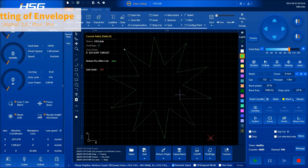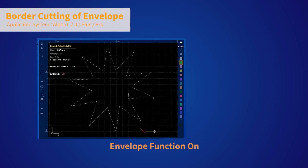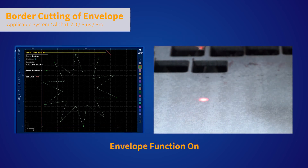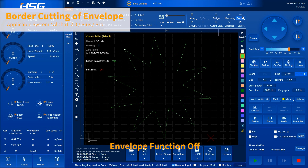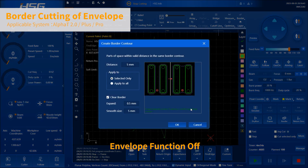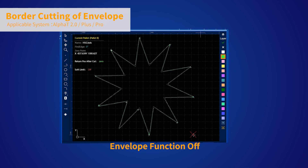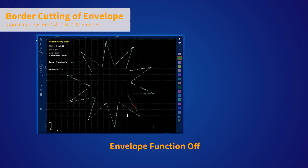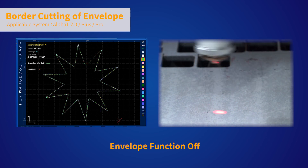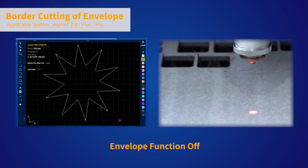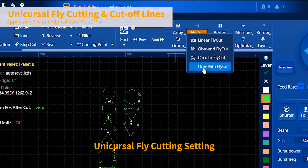Turning on the envelope function can achieve the walking edge of the shaped sheet by generating an envelope around the outside of the process part and walking the envelope before processing, to ensure that the processing range will not go beyond the area of the residual material sheet, improving the safety performance of the equipment.